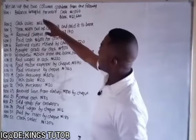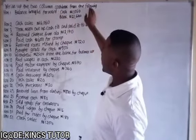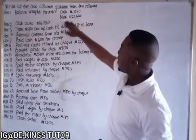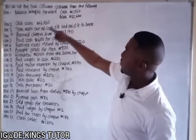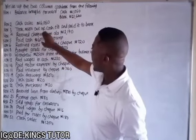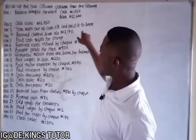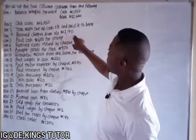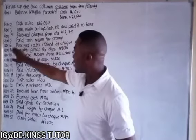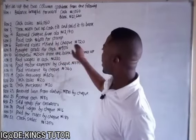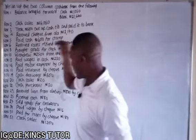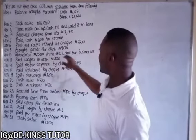The question says: write up the two column cashbook from the following. November 1 — balance brought forward, cash 1,050 euro, bank 21,640 euro. November 2 — cash sales 6,015 euro. November 3 — took 500 euro out of cash till and paid it to the bank. November 4 — 2,015 euro. November 5 — paid cash 600 euro for stamp. November 6 — received rates refund by check 720 euro. November 8 — bought goods for cash 900 euro. November 10 — withdrew 2,500 from the bank for business use.